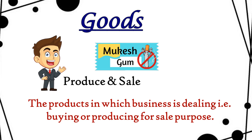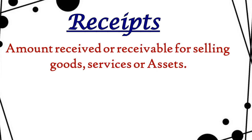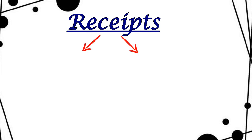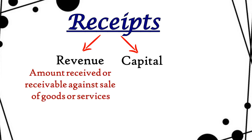The next term is receipts. Receipts means amount received or receivable — the amount you have already received or will receive in the future. Receipts are divided into two categories: revenue receipts and capital receipts. Revenue receipts is the amount you receive from selling goods or services — the things you do business in.